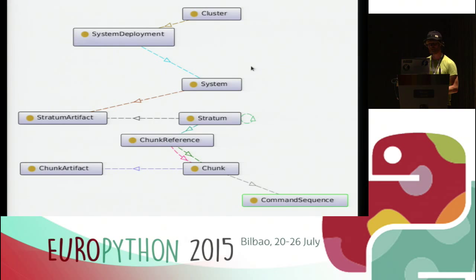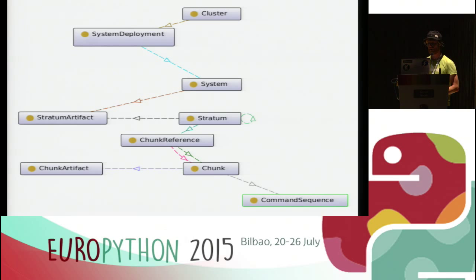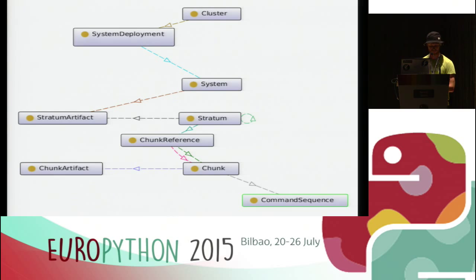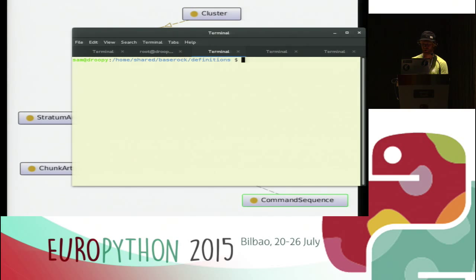We have this data model which is still fairly simple. We have a command sequence as the fundamental unit, then something called a chunk which is like a package. We have groupings called strata and systems which in the future we'll probably do away with, having just one sort of component that contains other components. The final entity is the cluster, which represents a cluster of systems - when you deploy with BaseRock tools you deploy a cluster, even if there's only one system. Our reference systems repository contains chunks for things like Python, GTK, Qt, and various Python libraries. It contains strata integrating those into logical groupings - for example there's a Qt5 stratum. I'm going to show YBD starting to build something.